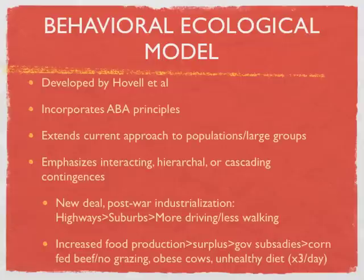The behavioral ecological model involves what Hovel might call cascading contingencies. Simple examples relate to the New Deal and this post-war industrialization that we've read about in America, and whose effects we certainly see now.